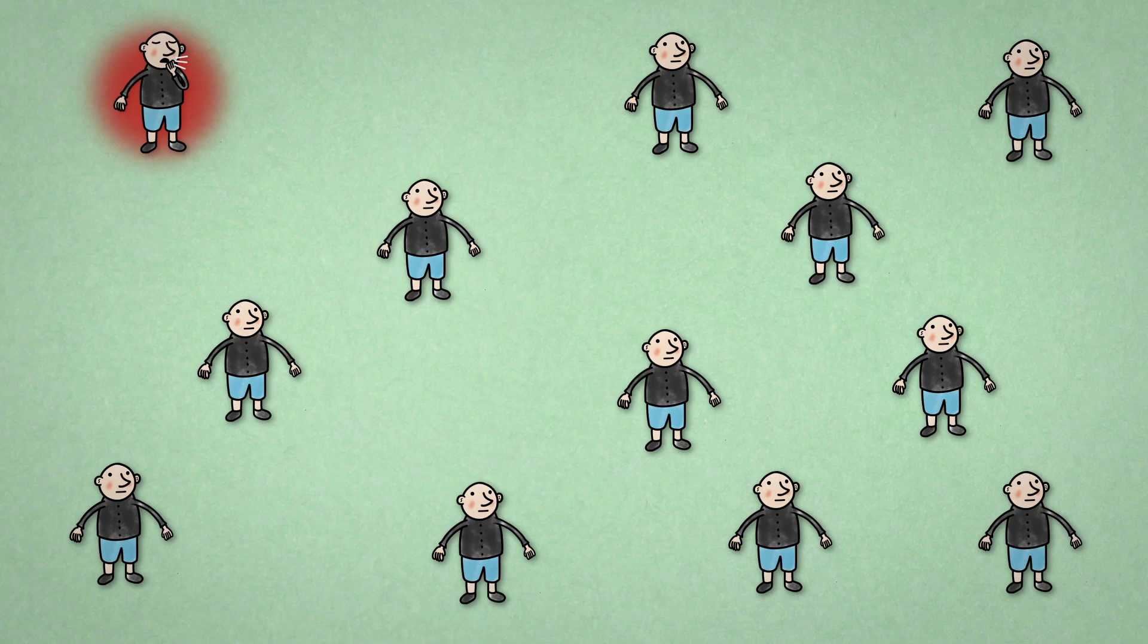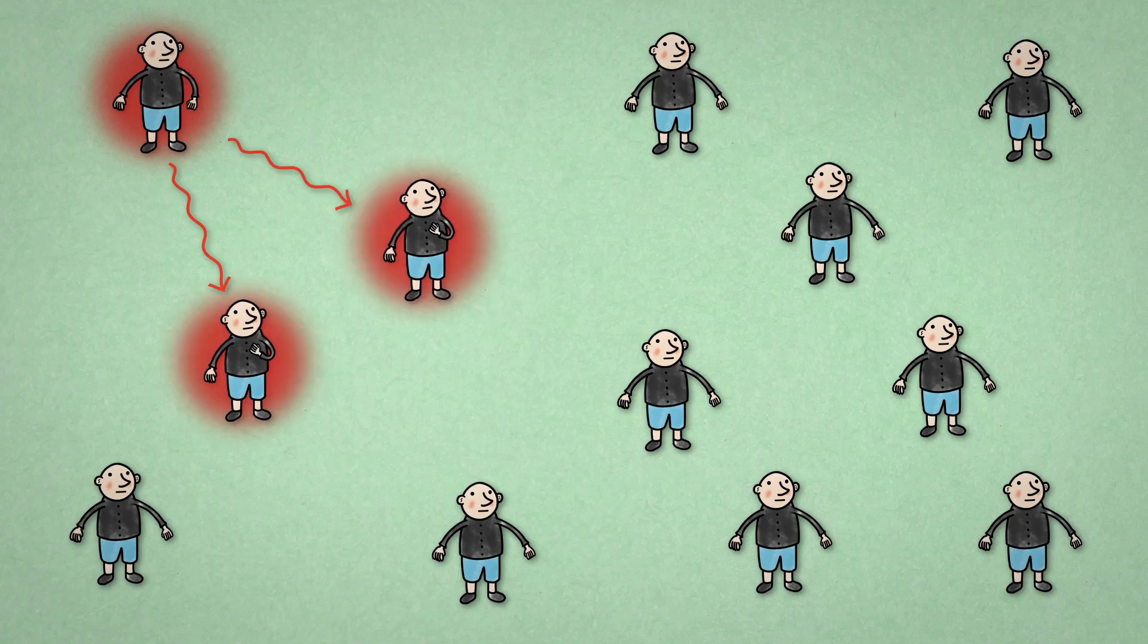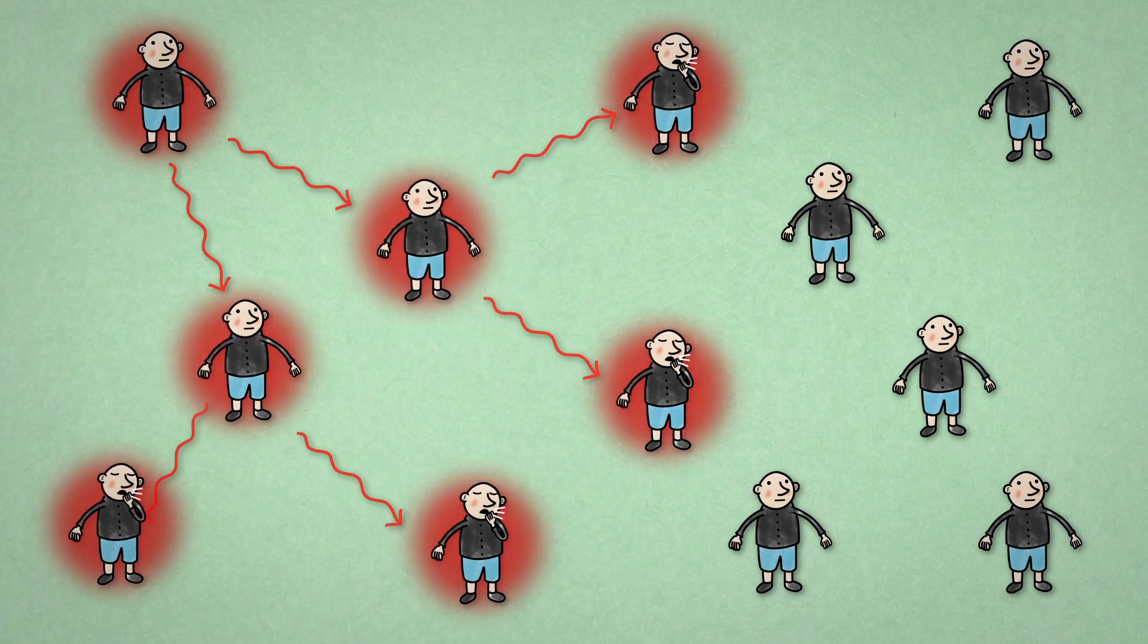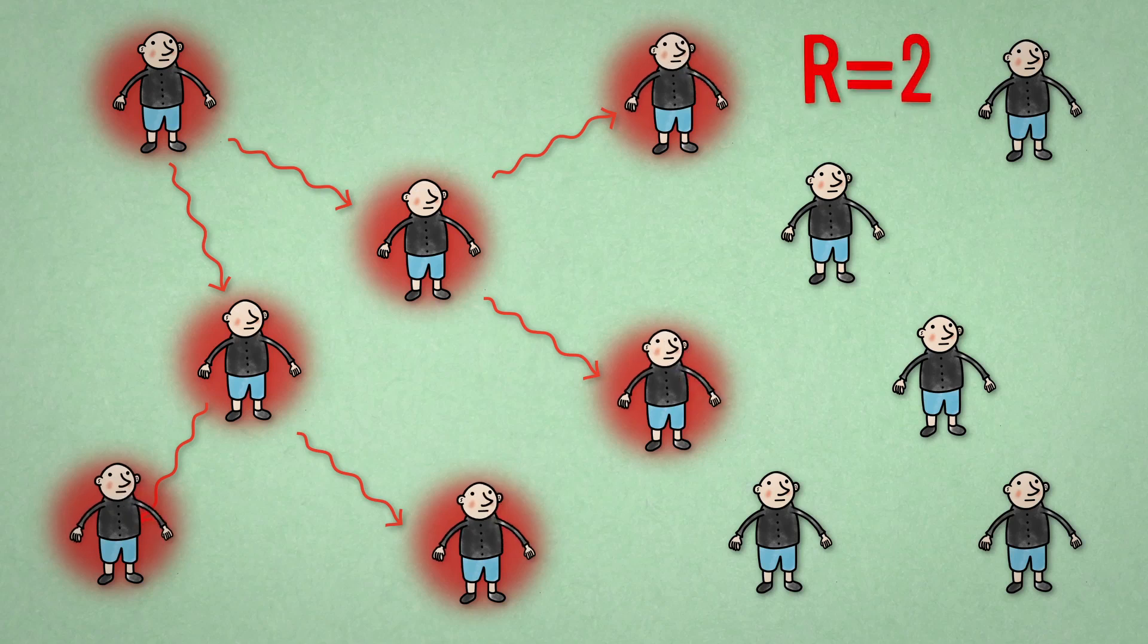An infectious disease can spread because infected people infect healthy people. Somebody who is contagious can infect, on average, two other people. In other words, the basic reproduction rate is two.